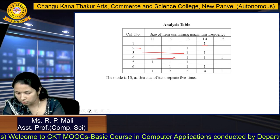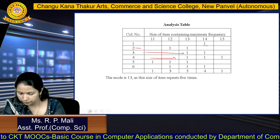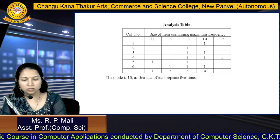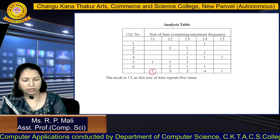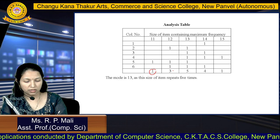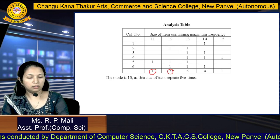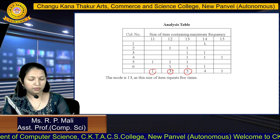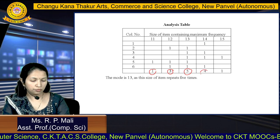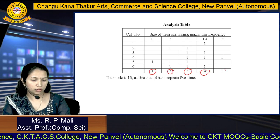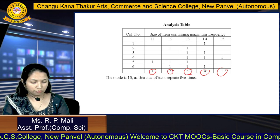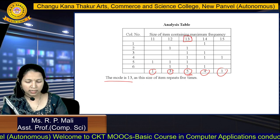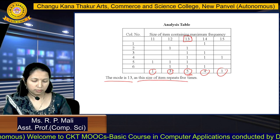After placing all the 1s, we add them up for each size: size 11 has 1, size 12 has 3, size 13 has 5, size 14 has 4, size 15 has 1. The highest count is 5, which belongs to size 13. So the mode is 13, as this size of item appears most frequently across all columns.